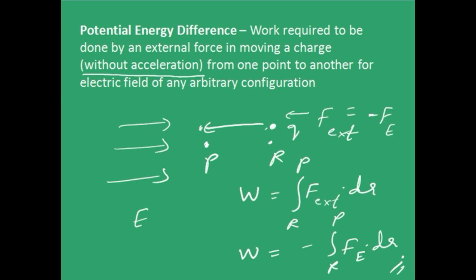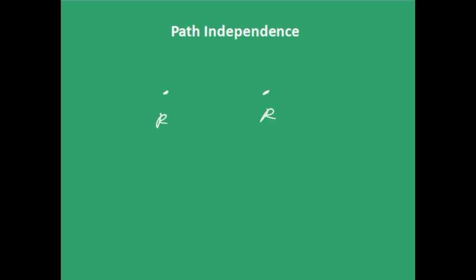Let me tell you something important here. This is the fundamental characteristic of any conservative force. What I mean to say is that if you bring the charge from R to P — whether in this direction, or in this direction, or in this direction — it really doesn't matter. Finally, the change in the potential energy will be the same. That is the meaning of path independence.